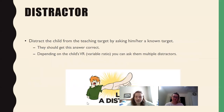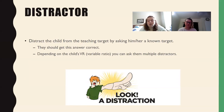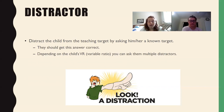Then you do a distractor — you distract the child from the teaching target by asking a known item. This is one of the reasons knowns are so important: you need to have them ready to pull out for distraction. They should get this answer correct — they don't always, but it should be easy. Depending on the child's VR, you could ask multiple distractors. For early learners it's definitely one, but for higher-level learners who can handle more, it's good to do two or three.